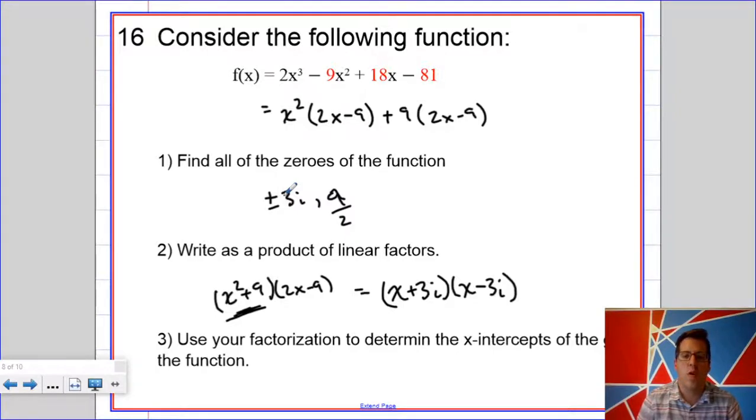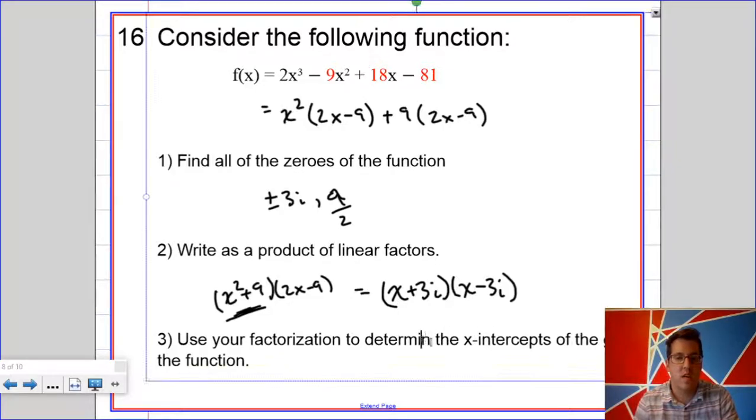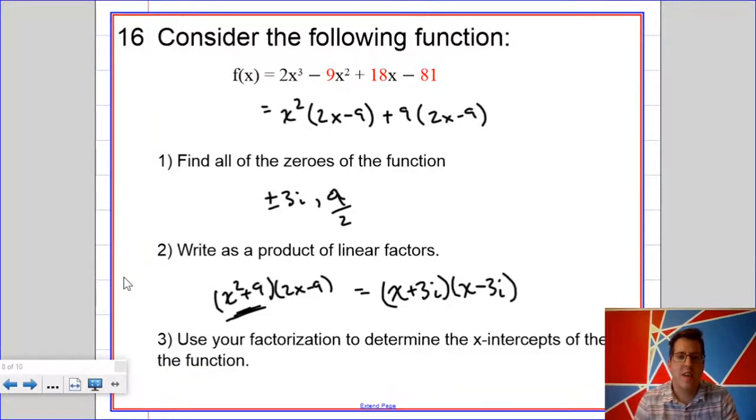Now, use your factorization to determine the x-intercepts of the function. So that just means the real zeros. I didn't finish the problem above, sorry. I'm sure you were all screaming at the screen. So the x-intercepts are just the real zeros, so this is just 9 halves. I think you only need to enter an x-coordinate, not both. Moving on!